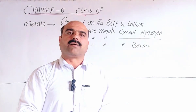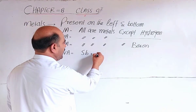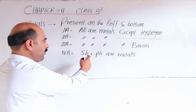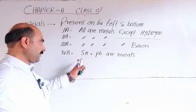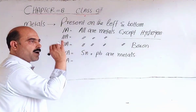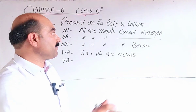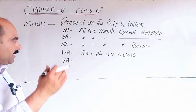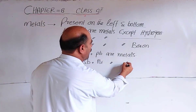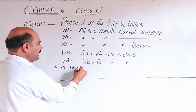Group 4: carbon and silicon are non-metals; germanium is a metalloid; tin and lead are metals. Group 5: nitrogen, phosphorus, arsenic, antimony, and bismuth. From top to bottom, metallic character increases, so antimony and bismuth at the bottom are metals; nitrogen and phosphorus at the top are non-metals. Group 5 has both metals and non-metals.